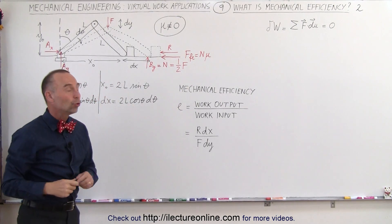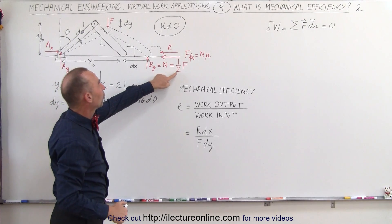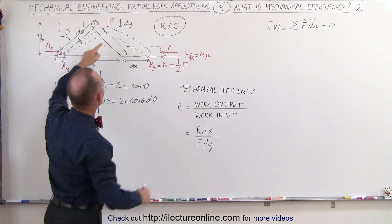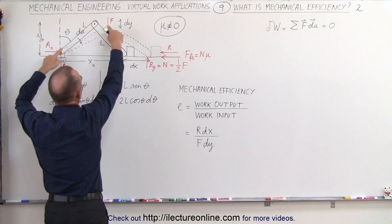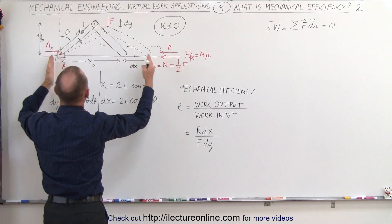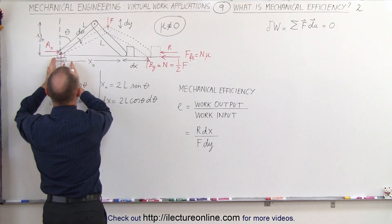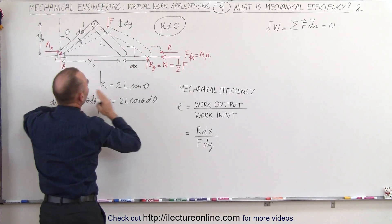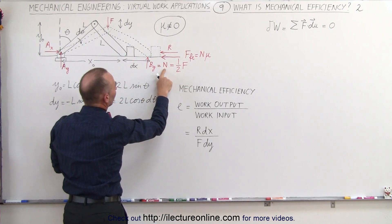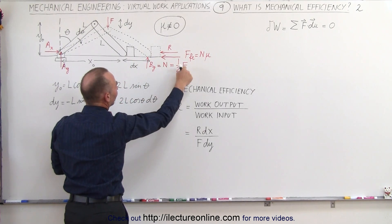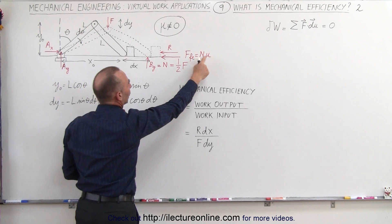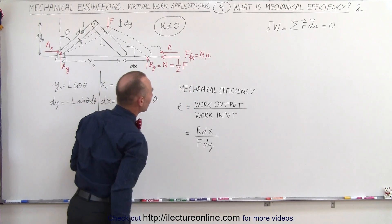The normal force is going to be equal to one-half the force applied at the top, because of symmetry — this force in the vertical direction is counteracted on both ends: half of it at A sub y, and half of it at B sub y. So the normal force is one-half f, and the friction force is defined as the normal force times mu.